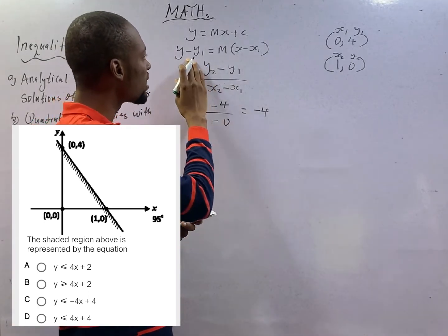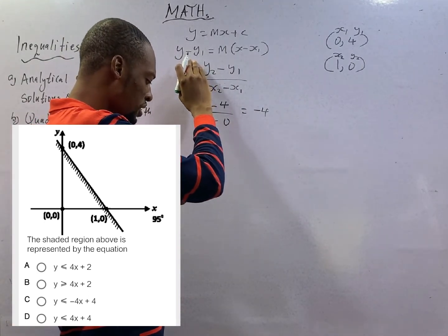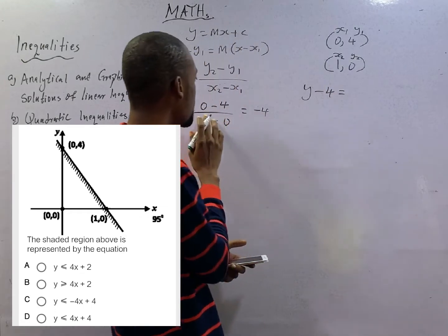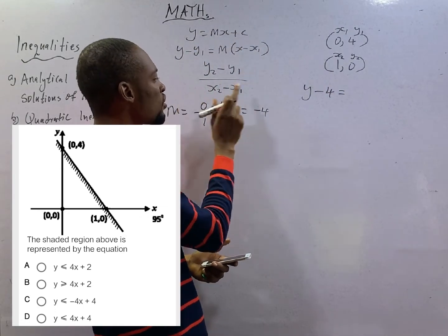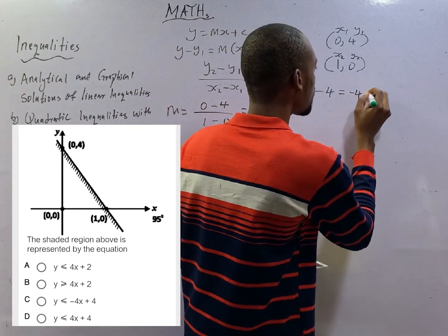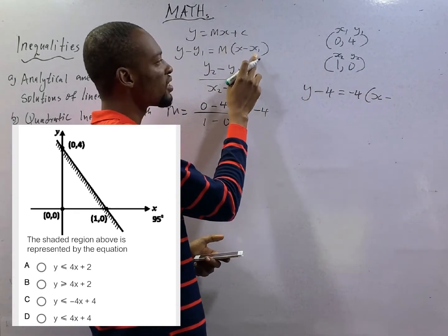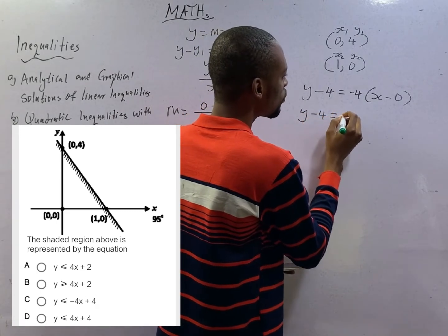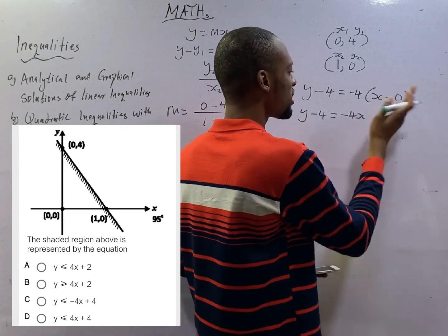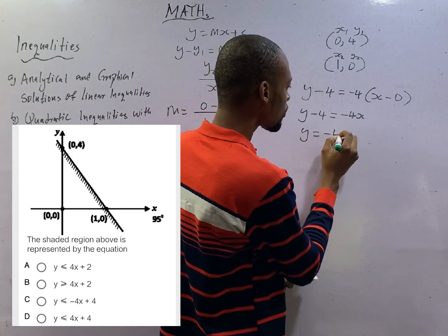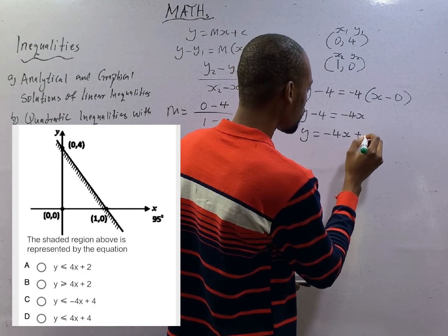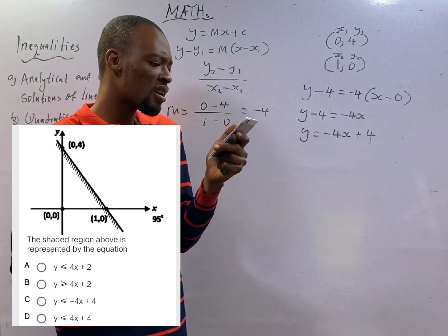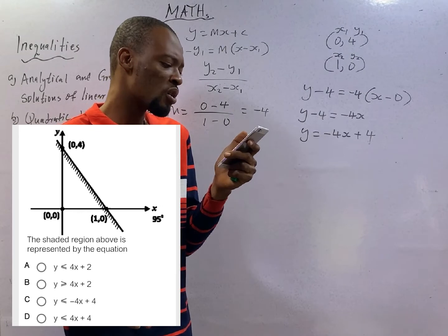If we try to substitute it here to get the equation, this will simply be y - y1 is 4 equals m, (y2 - y1) / (x2 - x1), so -4, x - x1 is 0. This gives us y - 4 = m. y2 - 4 times 0 is 0. We therefore have y = -4x + 4. Looking at all the options, only option C even has -4x + 4, which means only option C is the correct option.